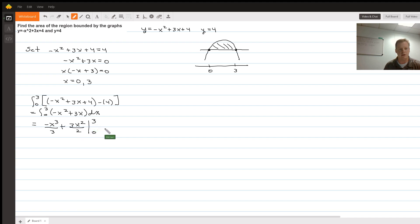Evaluated from 0 to 3. If you plug in 3, 3 cubed is 27, 27 divided by 3 is 9, so that's going to be negative 9 plus, if I plug in 3, 3 squared is 9 times 3 is 27, 27 over 2, minus plugging in the lower limit of 0 which is going to wash both of these terms out, so just 0.